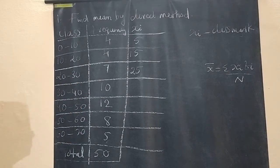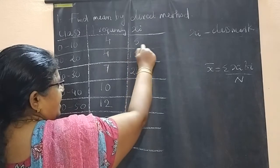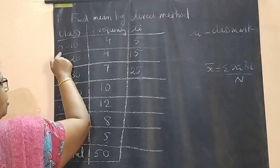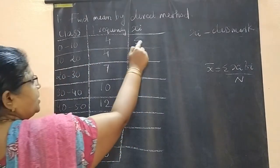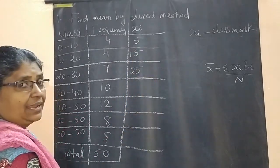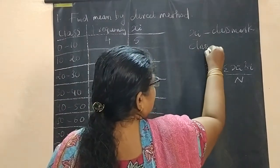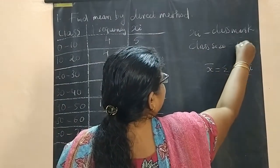If the class size equal or class width equal, after getting the first xi, first xi you have to find (lower limit + upper limit) / 2 = 5. Then you go on adding class size. What is our class size? Class size you got 10.